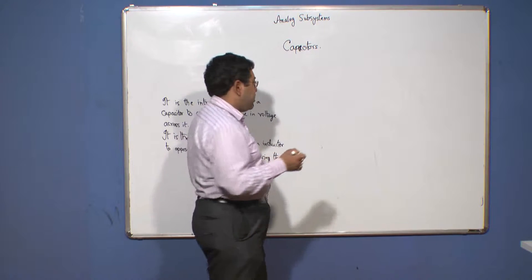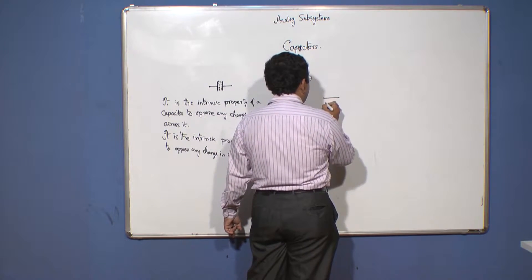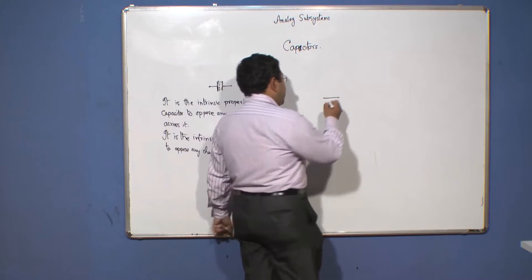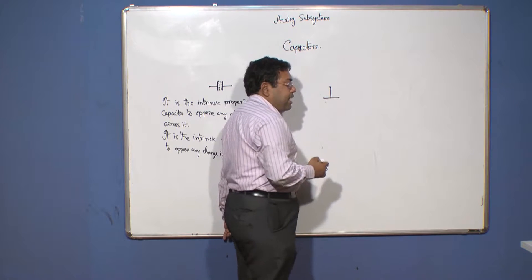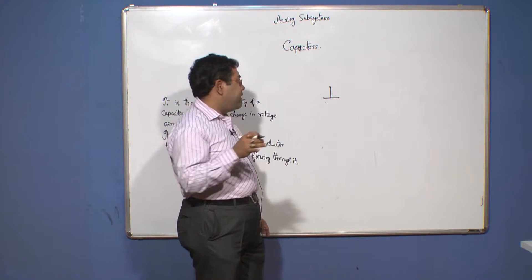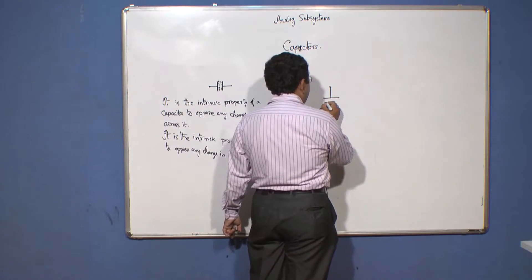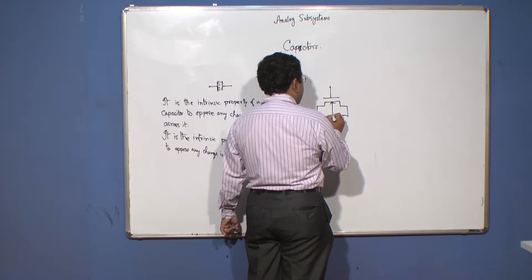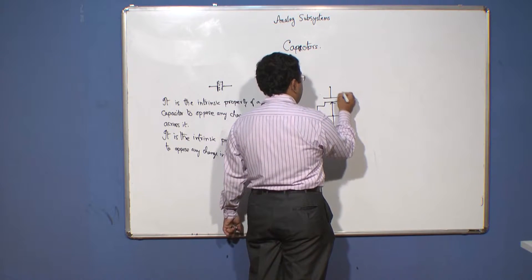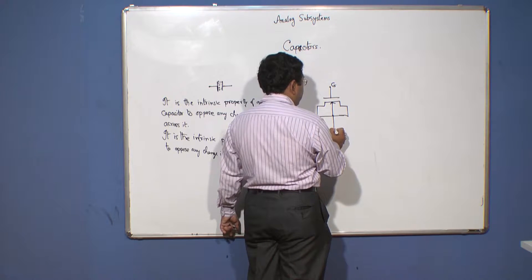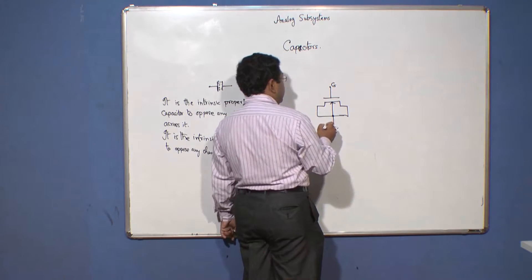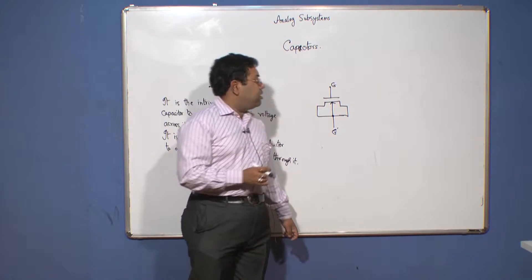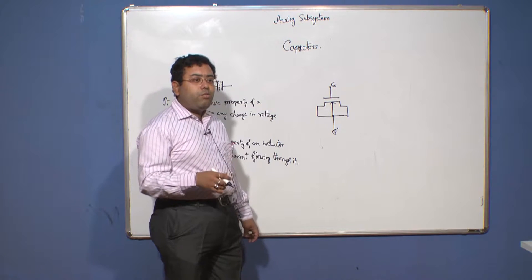The question is how to implement a capacitor with a MOS transistor. As you know, a MOS device essentially behaves like a capacitor with the metal acting as one terminal, the oxide as the dielectric in between, and the semiconductor as the third terminal. Given a MOS transistor, we can short the drain, source, and bulk terminals to make it behave as a capacitor.